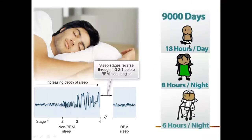Sedatives and hypnotics are drugs used to treat insomnia, a word that has become so common even a layperson understands it. On average, a person sleeps around 9,000 days in a lifetime. As a child, a person sleeps around 18 hours a day; in adulthood it's around 8 hours; and in elderly life it's about 6 hours. Sleep goes through various stages — stage one through four — and then REM sleep begins.